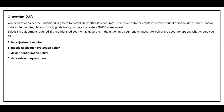Question number 233. You need to consider the underlying segment to establish whether it is accurate. To retrieve data for employees who request personal data under General Data Protection Regulation guidelines, you have to create a GDPR assessment. Select no adjustment required if the underlying segment is accurate; if inaccurate, select the accurate option. Option A, no adjustment required. Option B, mobile application protection policy. Option C, device configuration policy. Option D, data subject request case. The correct answer is Option D, data subject request case.